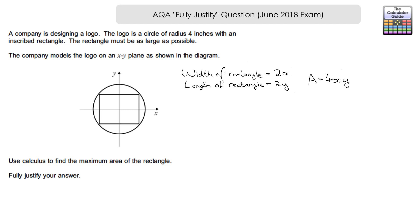At the moment we have two unknowns. To resolve that, we introduce the equation of the circle. The center is (0, 0) and the radius is 4, so the equation is x² + y² = 16. We now have two simultaneous equations. If we rearrange the circle equation in terms of y and substitute it into the area equation, the only unknown will be x.